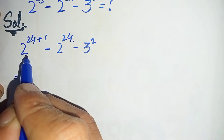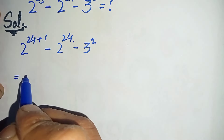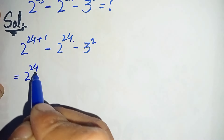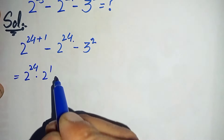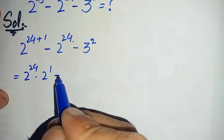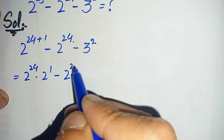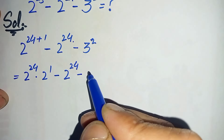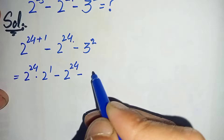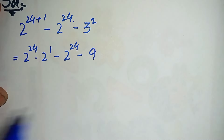Next, in the first term we will use the exponent math property and we will spread the power over 2. So this will become 2 raised to power 24 times 2 raised to power 1, minus 2 raised to power 24, minus 3 square, which is 9.